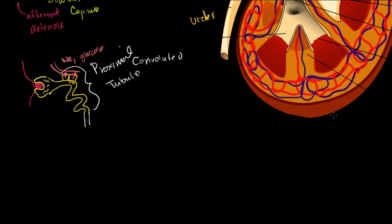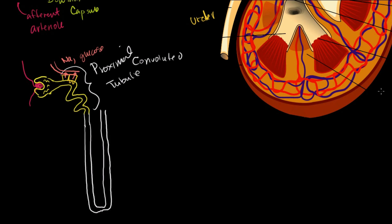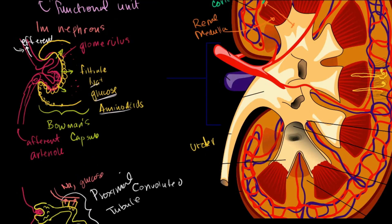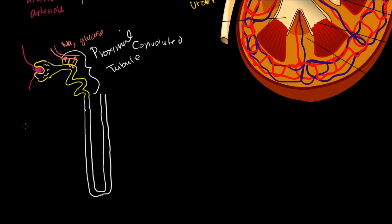Then we'll enter the loop of Henle — in my mind, the most interesting part of the nephron. The loop of Henle dips down and then comes back up. Most of the length of the nephron is the loop of Henle. It crosses the border between the cortex and the renal medulla, and it does that for a very good reason. So let's say this is the dividing line — this is the cortex, and this right here is the medulla.